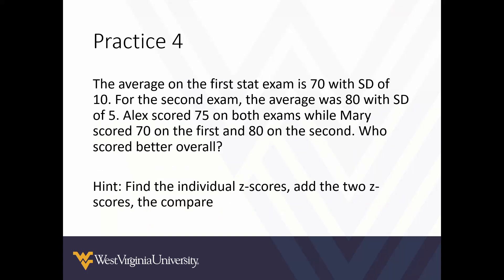The average on the first stats exam was 70 with a standard deviation of 10. For the second exam, the average was 80 with a standard deviation of 5. Alex scored 75 on both exams, while Mary scored 70 on the first and 80 on the second. Who scored better overall? This is similar to our motivating example comparing ACT and SAT scores. We'll compare their z-scores to find out.